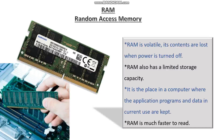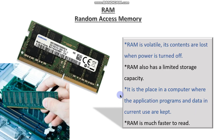Now moving on to the next type of internal memory — RAM, or random access memory. As you can see, these are a few examples of RAM. RAM is volatile — its contents are lost when power is turned off. When you switch off your computer, whatever you are working with that has not been saved will be lost. RAM also has a limited storage capacity. It is the place in a computer where application programs and data currently in use are kept, and because it is volatile memory, it is very fast.